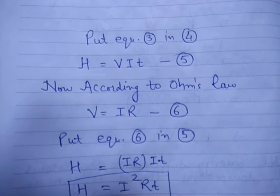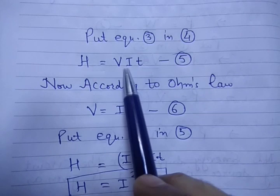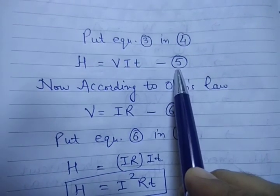Now put equation number 3 in equation number 4. We will get H equals VIT, that is potential difference times current times time. This is equation number 5.